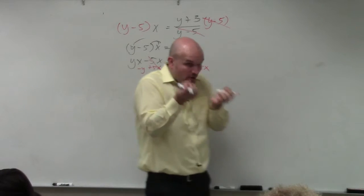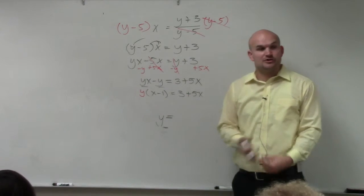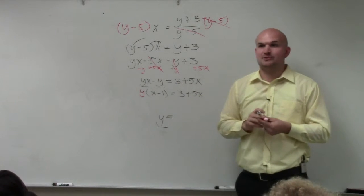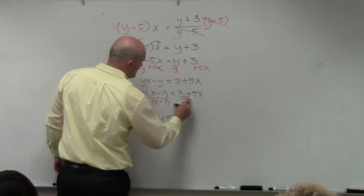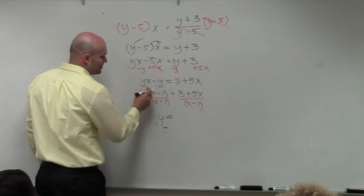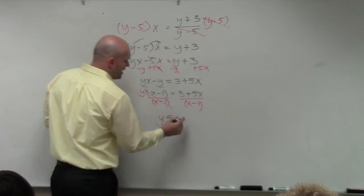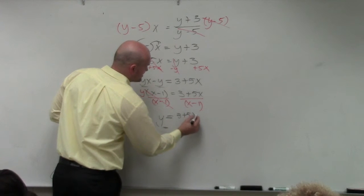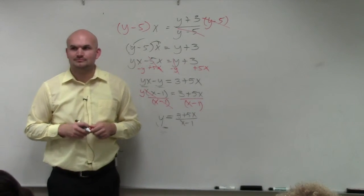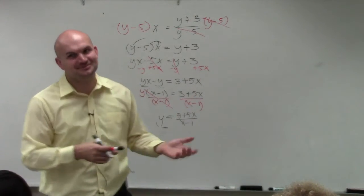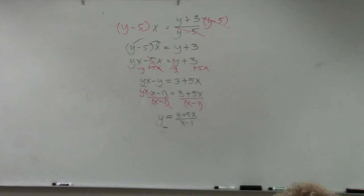You can see that my one variable y that I'm trying to solve for is being multiplied by x minus 1. So to undo multiplying by x minus 1, I have to divide by x minus 1 on both sides. By the division property, that goes to 1, and now I have y all by itself. y equals 3 plus 5x divided by x minus 1. Ta-da. That was a thing of beauty.